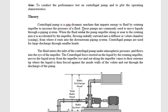These pumps are commonly used to move liquids through a piping system. When the fluid enters the pump impeller along and near to the rotating axis, it is accelerated by the impeller and flows radially outward into a diffuser or volute chamber, from where it exits into the downstream piping system. Centrifugal pumps are used for large discharge through smaller heads.